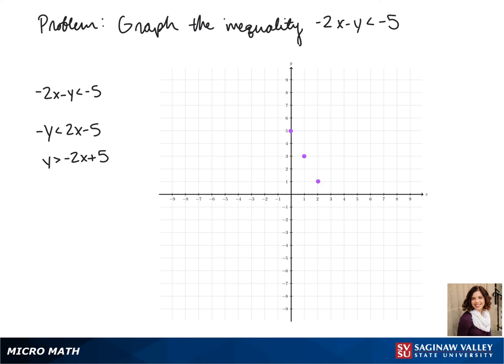To plot our line, first we plot our y-intercept, and then plot points using our slope. Since this is greater than instead of greater than or equal to, we use a dashed line to connect our points.